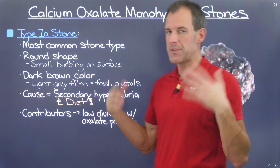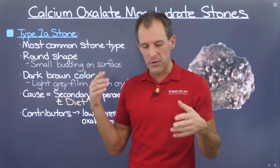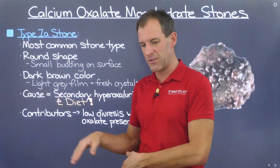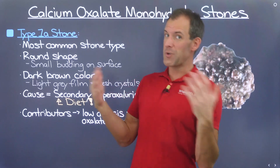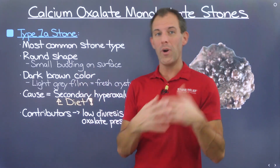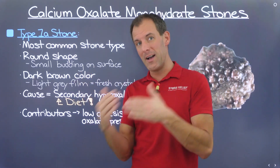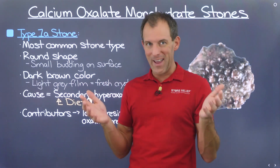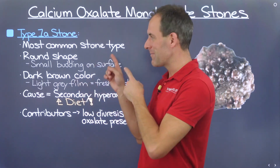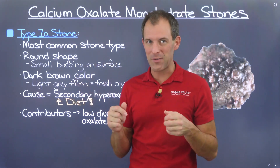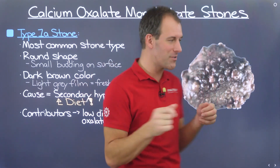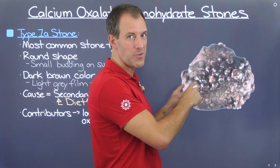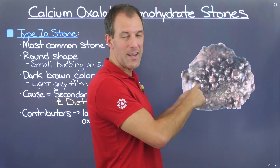Low diuresis is also a contributing factor, driven by low water consumption, which leads to low urine passage. When calcium and oxalate have time to mingle, they bind together and form calcium oxalate crystallizations that eventually aggregate and turn into these kidney stones.